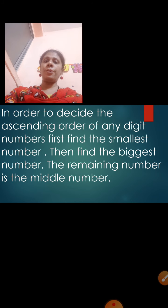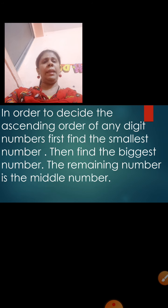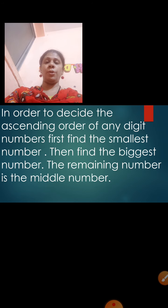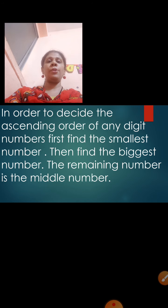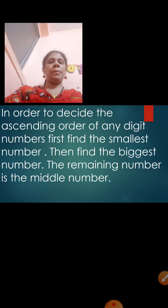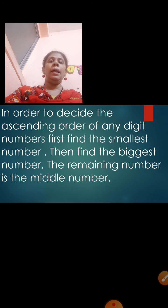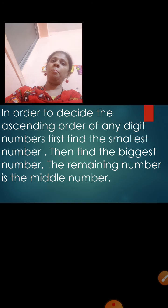In order to decide the ascending order of any digit numbers, first find the smallest number. If you want to write the ascending order, first find the smallest number, then find the biggest number, and then the remaining number is the middle number.